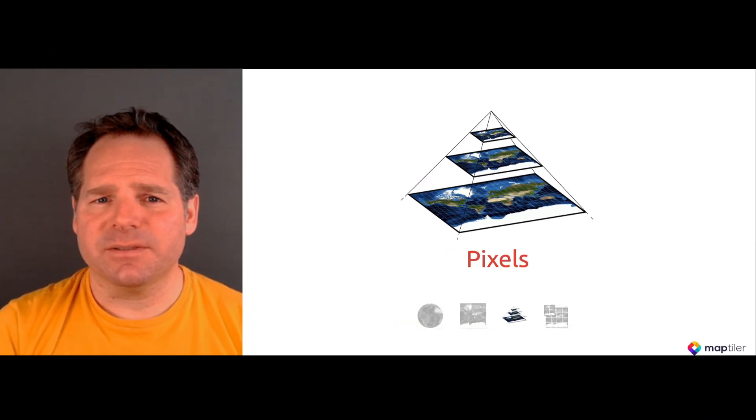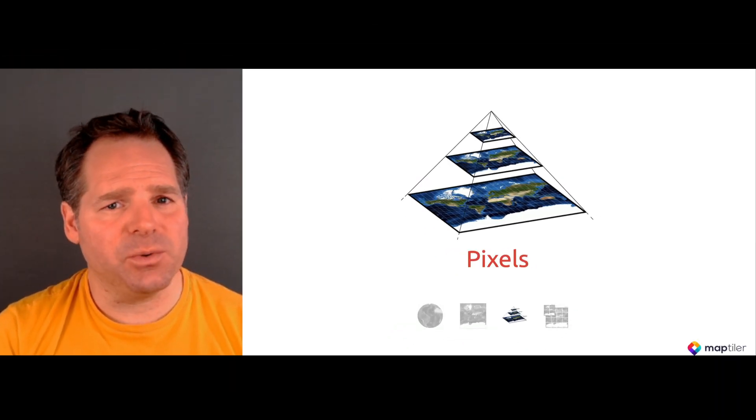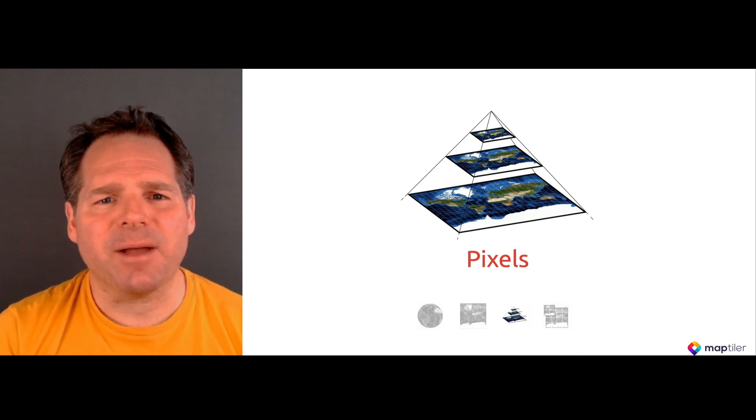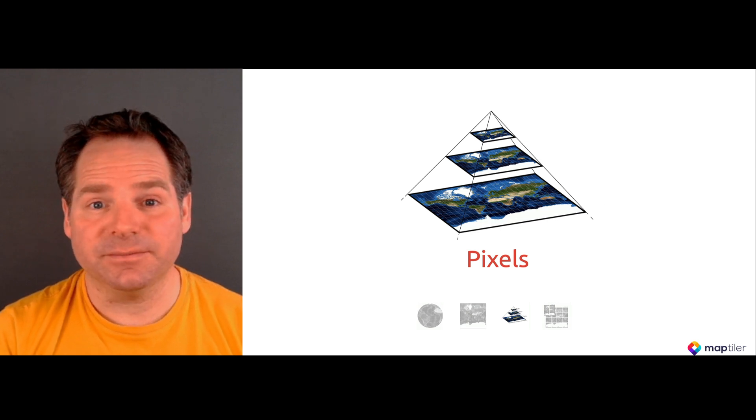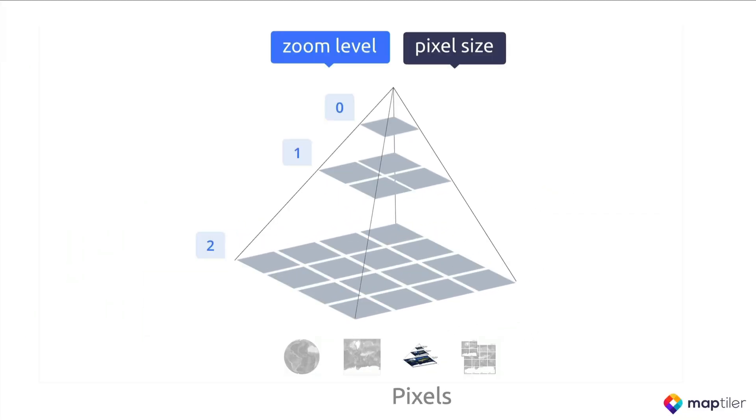Computer screens have coordinates in pixels, and the Mercator projection has coordinates in metres. If you want to show a map on a computer screen, you have to convert metres to screen coordinates in pixels, and this conversion varies depending on the zoom level. As we saw in the video about zoom levels, each one has a different number of pixels representing the whole Earth.